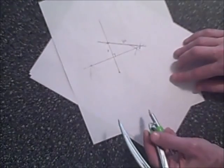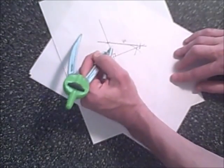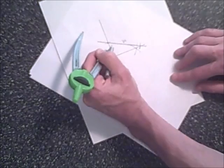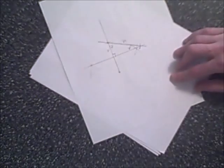Which means since this hypotenuse is twice the length of this small side, and this is a 90 degree angle, we have ourselves a 30, 60, 90 right triangle. This is 60 degrees, and this is 30.